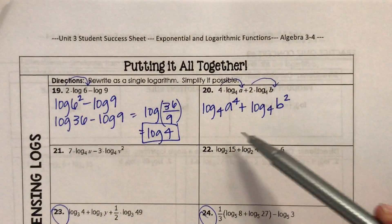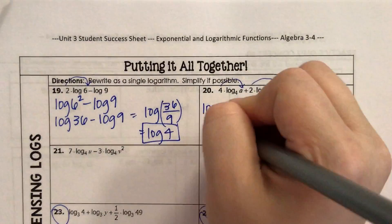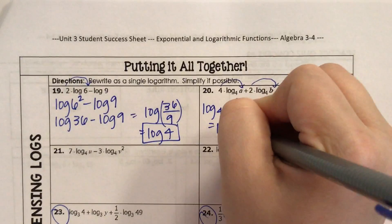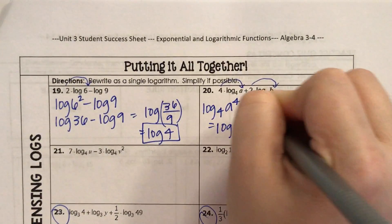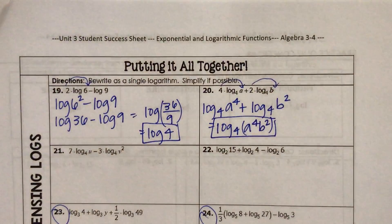I'm adding these two together, they have the same base, so I can make it one single log that has a product. So this is log base 4 of A to the fourth times B squared. I'll put that in parentheses, and that's it. That's all you gotta do.